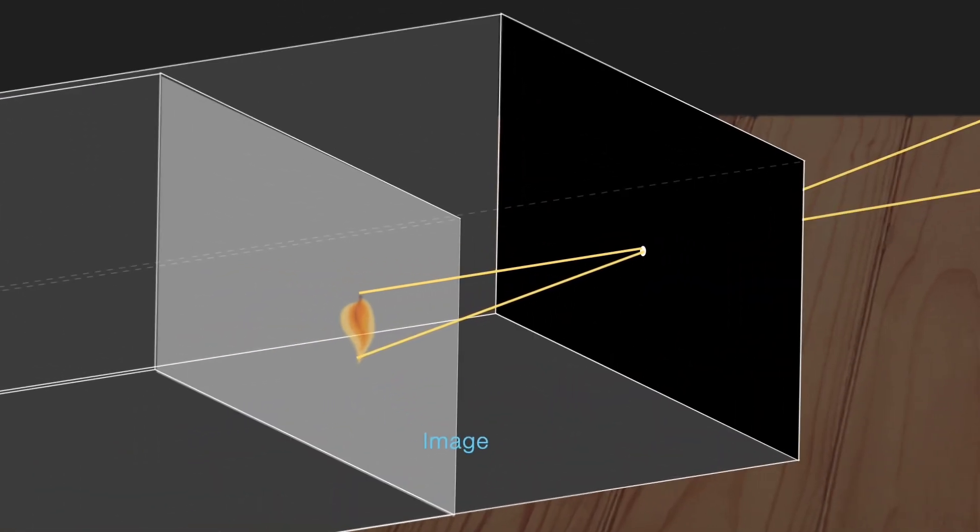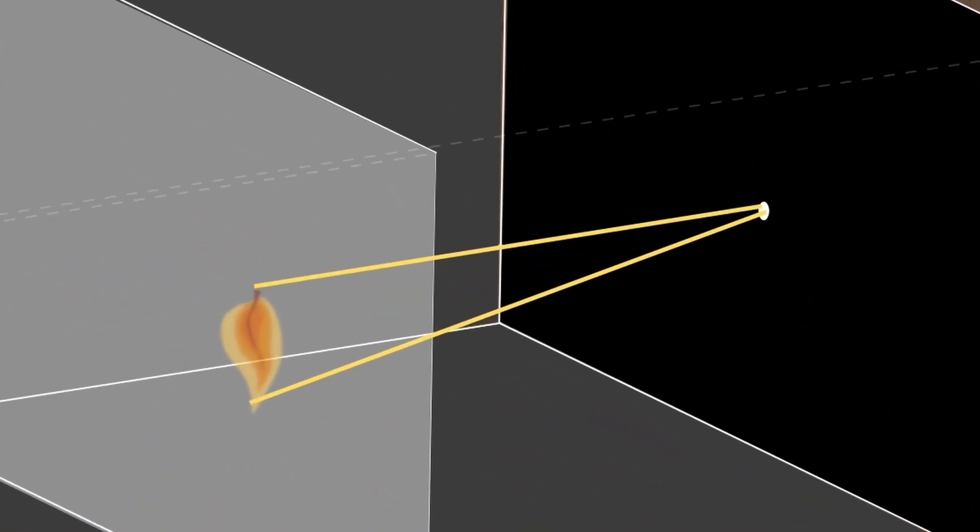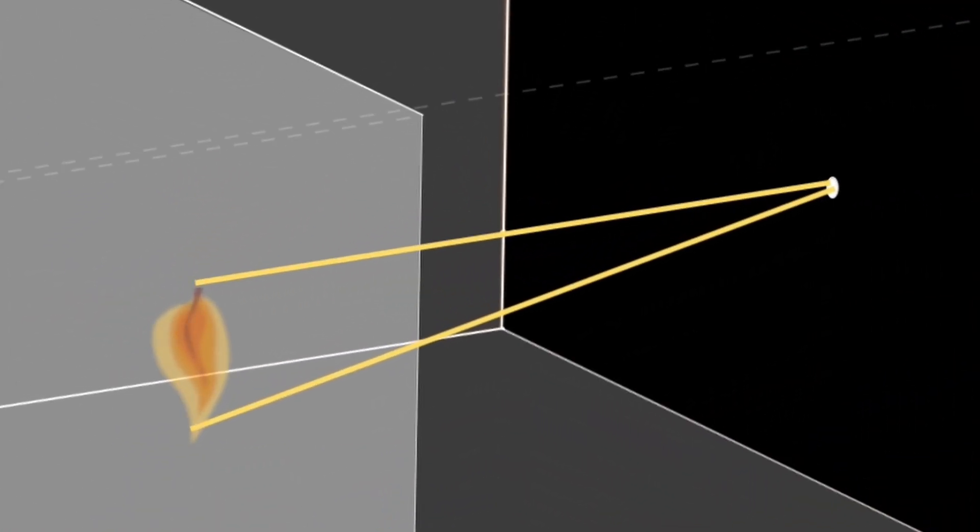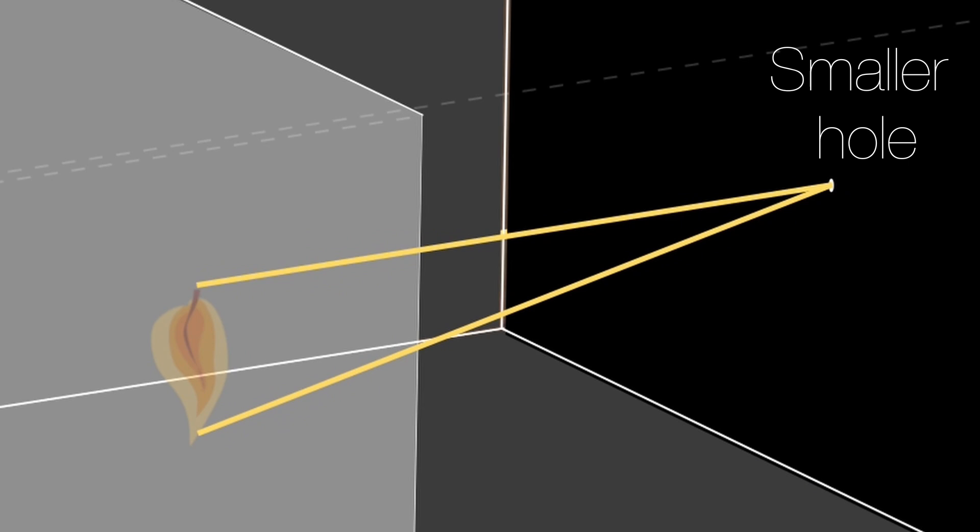Now here's the interesting part: the size of the hole actually decides how the picture looks. If the hole is really small, the image looks sharp but also dim because less light is entering. If the hole is bigger, the image looks brighter but also a bit blurry.